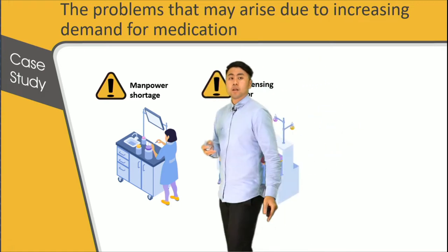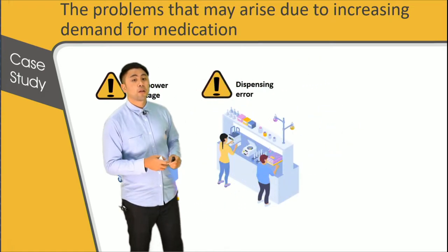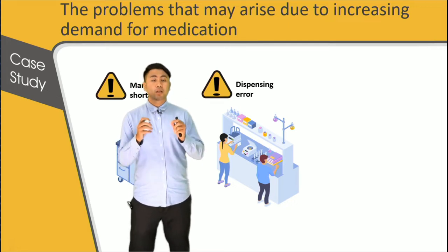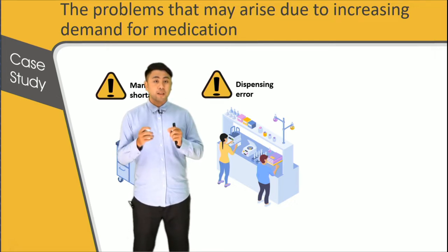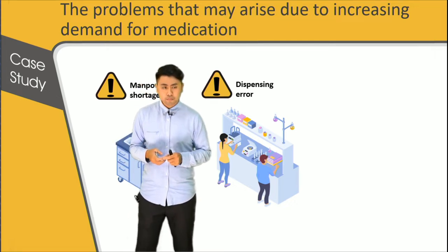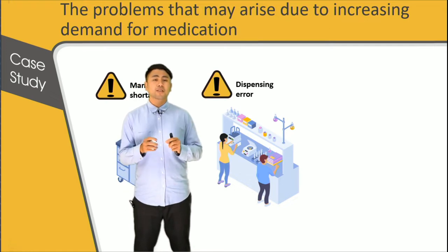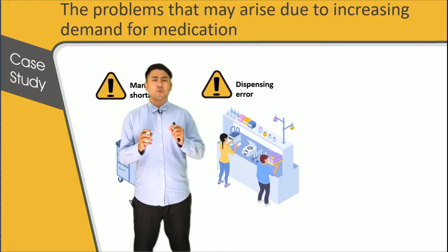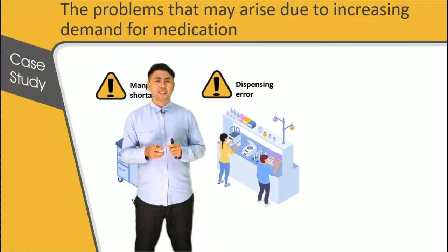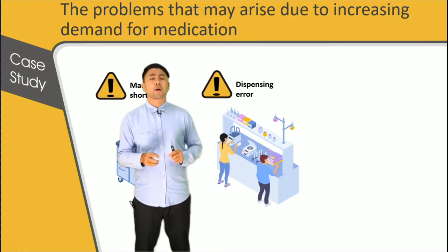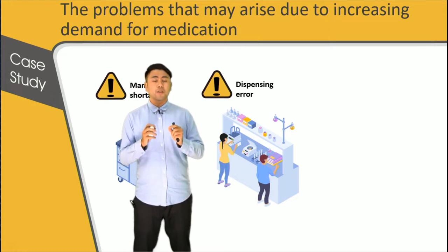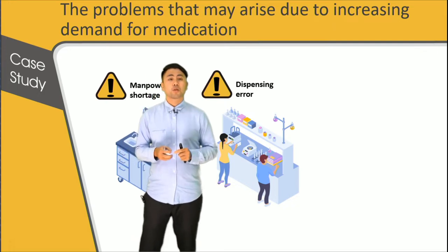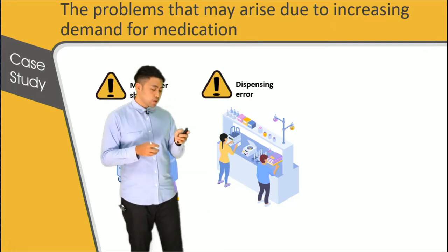And second, the dispensing error. Pharmacists need to maintain fast and accurate dispensing. However, under high pressure, it is still possible to make mistakes. And how to simplify the process of dispensing is a problem for hospitals to figure out.